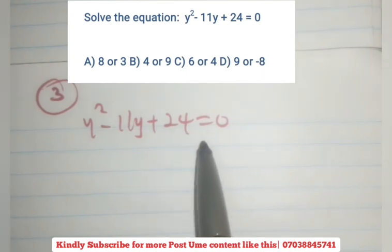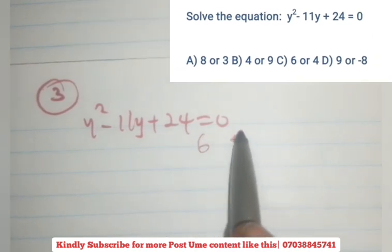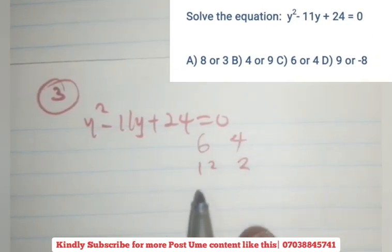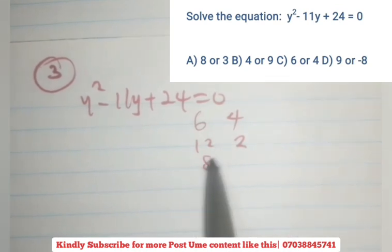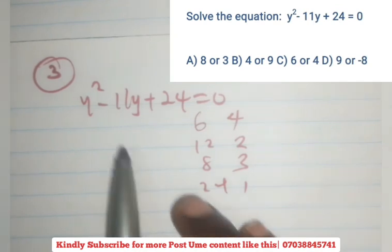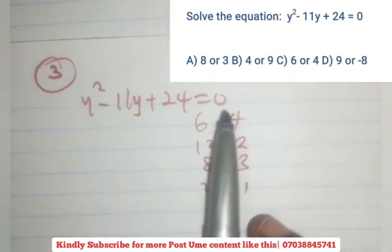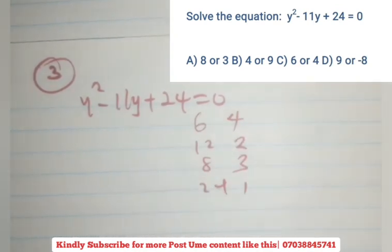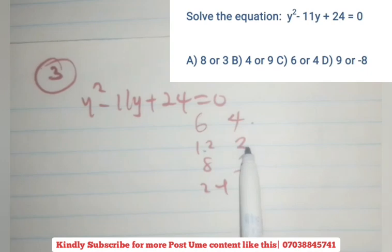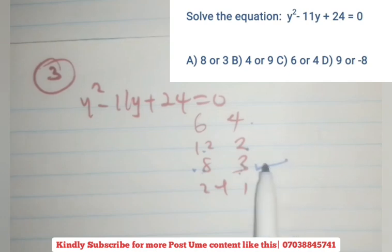Now let's look for those numbers. The numbers that can give us 24: you have 6 and 4, 12 and 2, you also have 8 and 3, and then you have 24 and 1. Now we're trying to get 11 in the middle here. None of these numbers can give us 11 except 8 and 3. It's only these factors that can give us 11. So this is what you are going to be using.